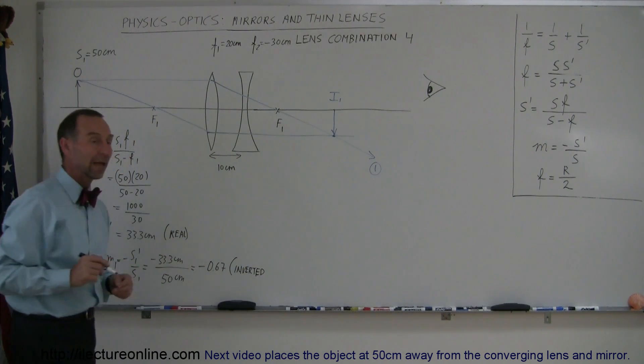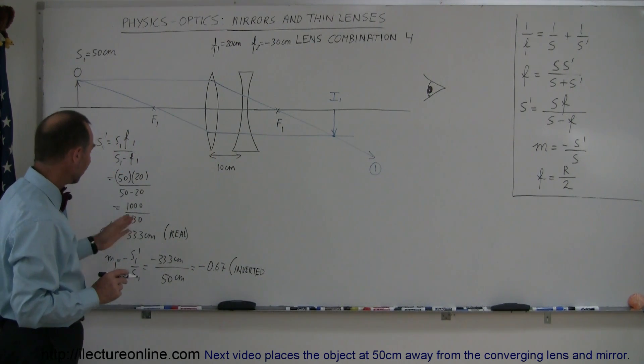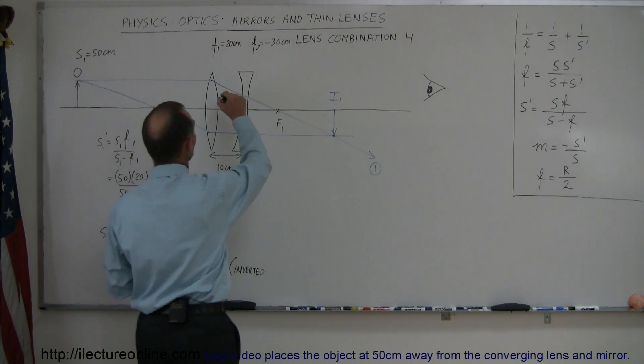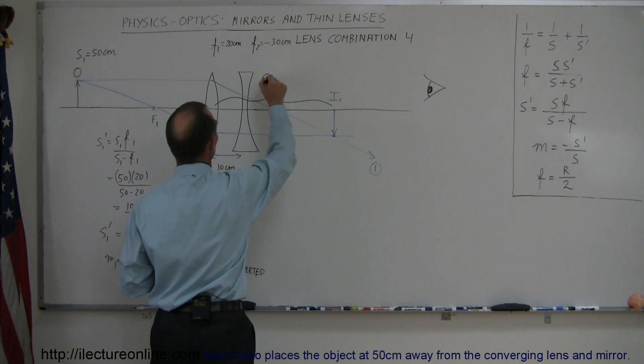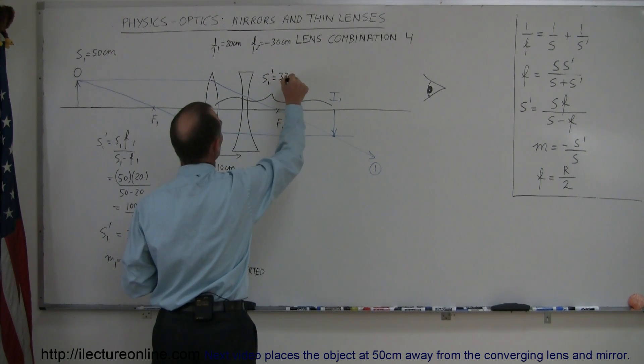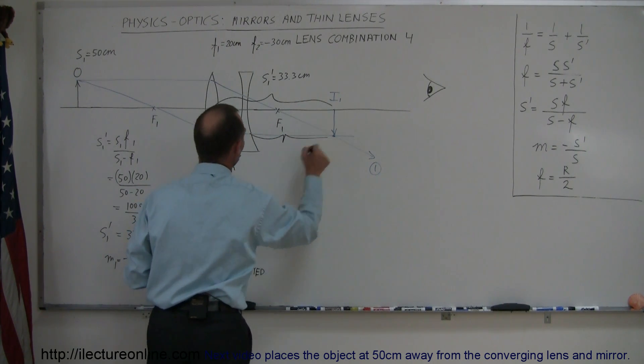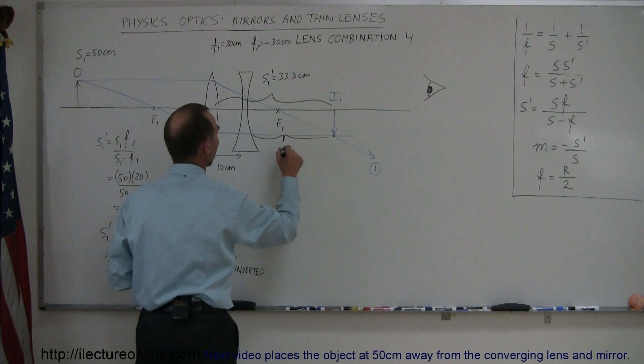The distance is 33.3 centimeters past the first lens. So we can say that S1' equals positive 33.3 centimeters, which means the distance from image 1 to the second lens is that number minus 10 centimeters, or 23.3 centimeters.